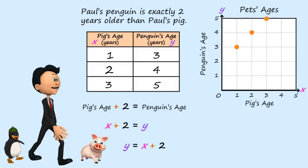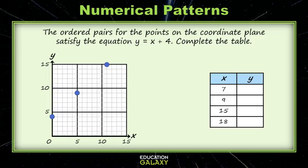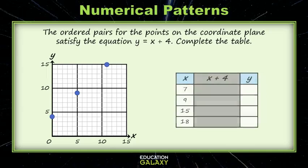Now that you know a little bit more about these relationships, let's try an example. We're given some ordered pairs on our coordinate plane for the equation Y equals X plus four. I need to complete the table for these other X values. Let's give ourselves some room to work here.